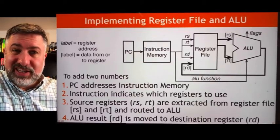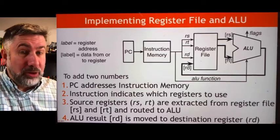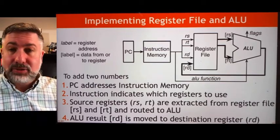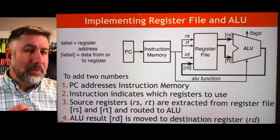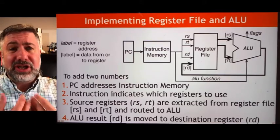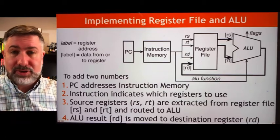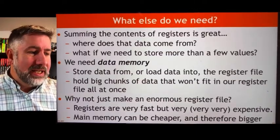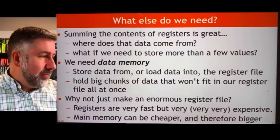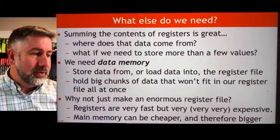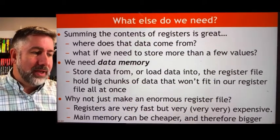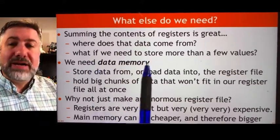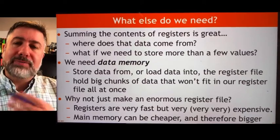We've put a bunch of pieces together and have a pretty good idea of how these pieces interact. We'll use them to start executing some instructions pretty soon, but first we need a couple more things. We need to get information into the register file and take the results from the register file and present them to the outside world. We need a way to get the contents of the register file — where does that data come from? We need to load and store a few new values, and we need another piece of memory, much like the instruction memory we built to look up instructions.